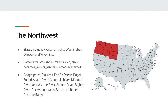The Northwest. States here include Montana, Idaho, Washington, Oregon, and Wyoming. This region is famous for its volcanoes, forests, rain, bison, potatoes, geysers, glaciers, and just the remote wilderness in general.